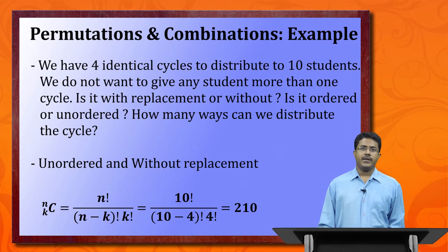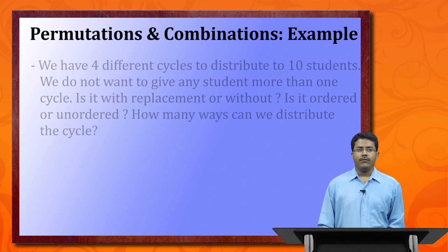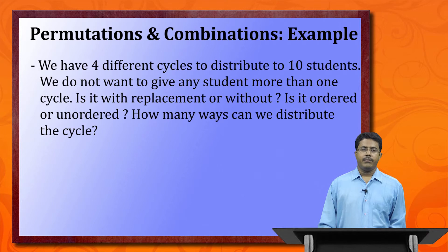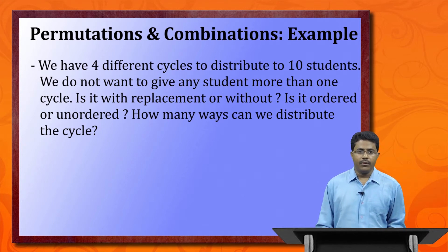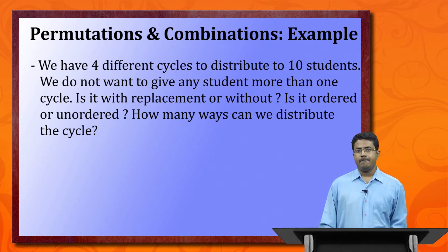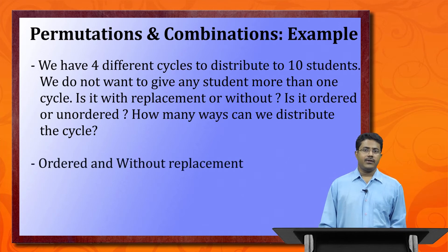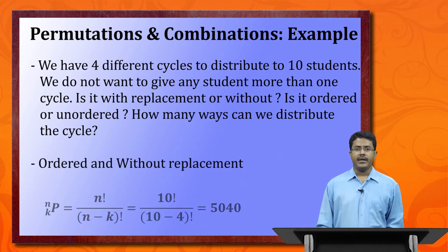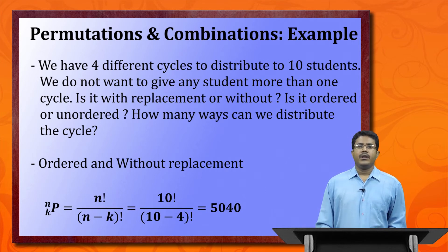Same example but the cycles are different — say red, blue, green, and yellow. Since cycles are distinct, the order matters — ordered. Since no student gets more than one cycle, it is without replacement. We use nPk, which gives 5040 ways to distribute the cycles.